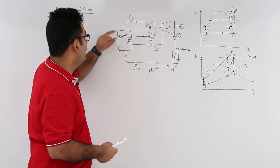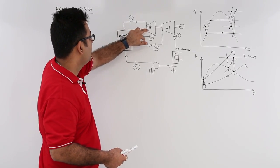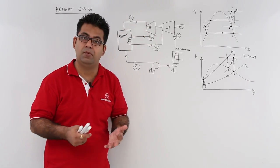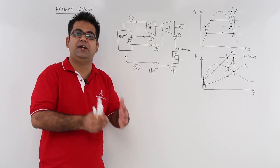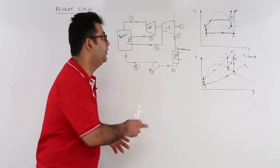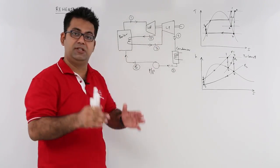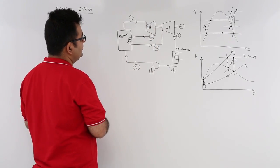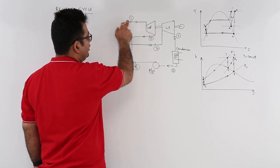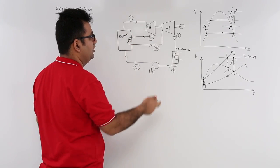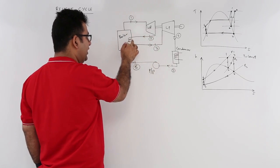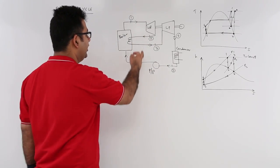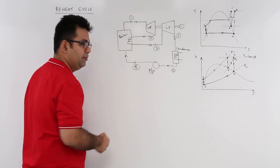We call it high pressure turbine because it operates at a comparatively higher pressure compared to the second turbine, which is the low pressure turbine. From the boiler, your steam goes into the first turbine at high pressure, then is bled at state 2 after a little bit of expansion and fed back into the boiler where you have your reheater.